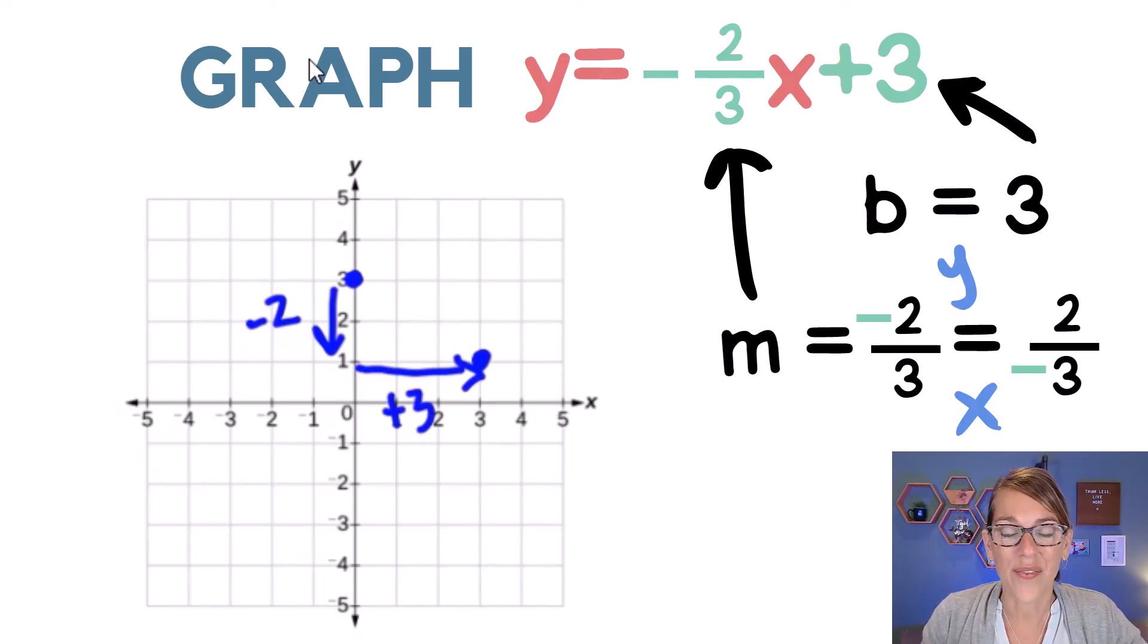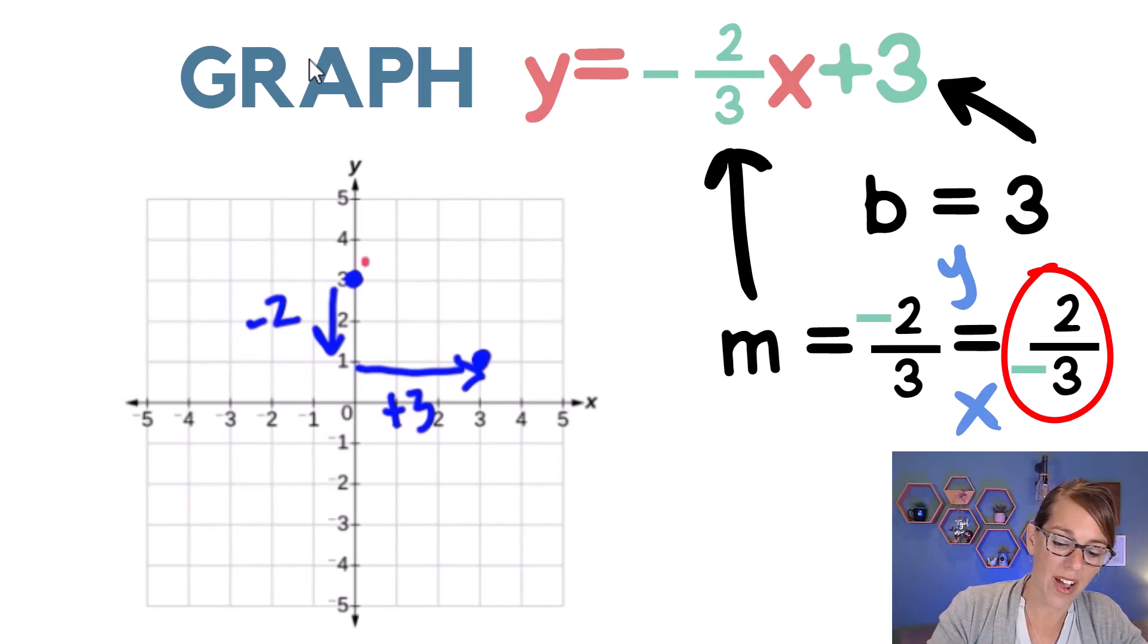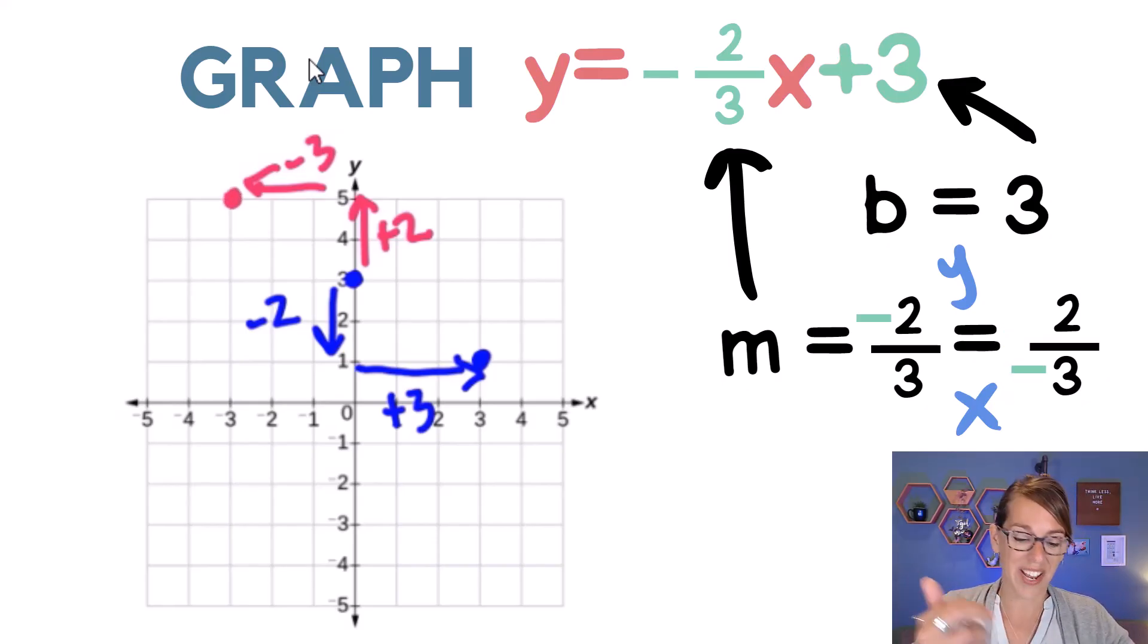Now let's use the other form. So in the other form, I would still start with my y intercept, but I'm going to move positive 2 in the y direction, and then a negative 3 in the x direction. So negative 3 in the x direction, that gives me my second point. These all live on the same line, and I can go ahead and graph that line through all three of those points. Infinitely many solutions.